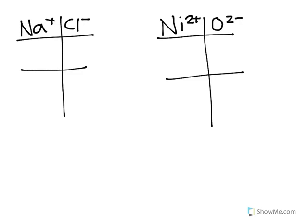Okay, when we look at these ionic compounds, we're going to notice that both of them have a charge. For example, sodium has a plus one, chlorine has a minus one, nickel has a plus two, oxygen has a minus two.